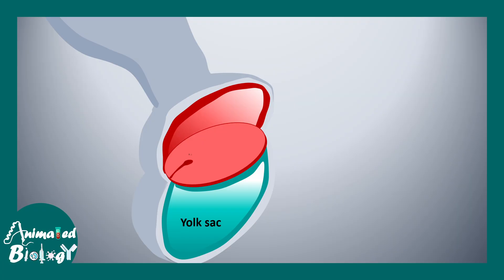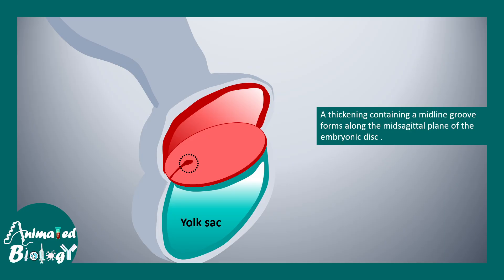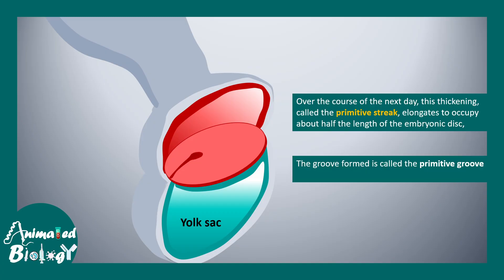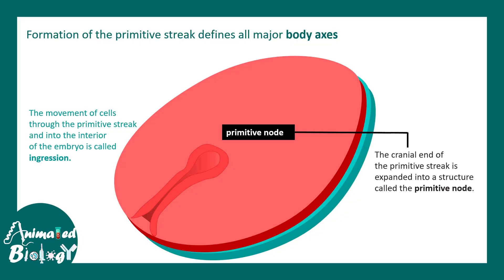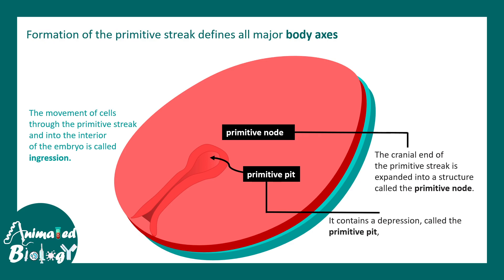At the caudal end of the embryo, a primitive streak forms. This is a thickening which contains a midline groove and forms the midsagittal plane of the embryonic disc. Over the course of the next day, this thickening — the primitive streak — elongates and occupies almost half the span of the embryonic disc, thereby forming the primitive groove. At the cranial end of the primitive streak, there is a formation known as the primitive node, and a depression at the primitive node forms the primitive pit.